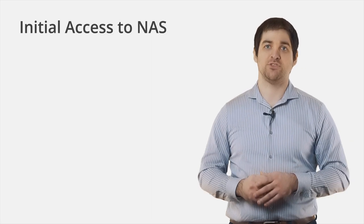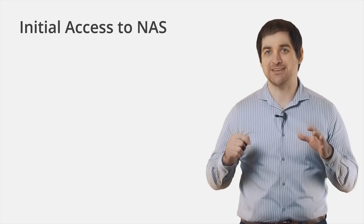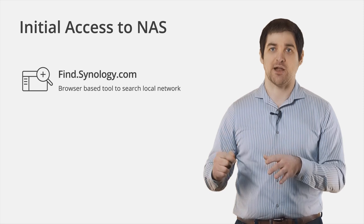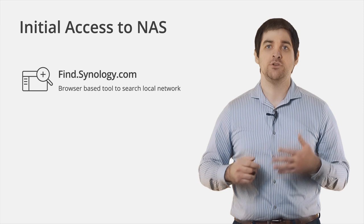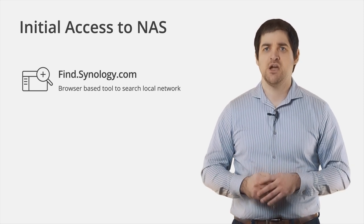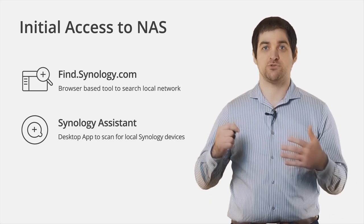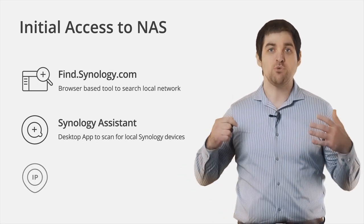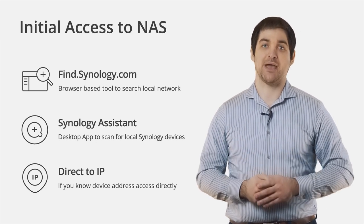There are three main ways that you'll be able to first access your device after getting it plugged in. Our devices are entirely accessed over the network so that you can easily set up and manage your device from another device on that same network. Logging into a browser and going to find.synology.com is an easy tool to search your network for Synology devices. Another option is to download Synology Assistant from our website, which will also search your network for Synology devices that you can then connect to. Finally, if you already know your Synology device's IP address, you can simply open your browser and navigate to the device manually.